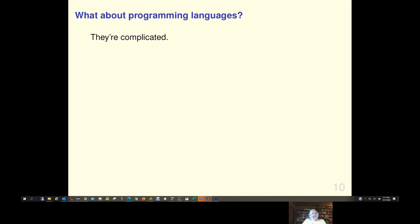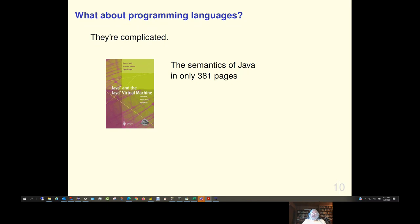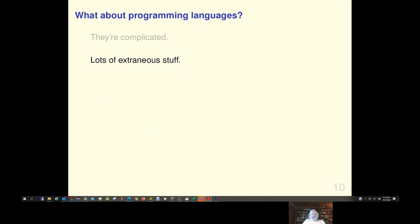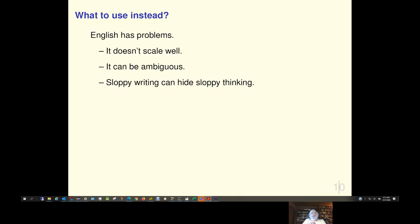And you can be sloppy in English. And sloppy writing can hide sloppy thinking. Well, what about programming languages? They're complicated. There's a book I found on the web called The Semantics of Java in only 381 pages. That's complicated. And programming languages have lots of extraneous stuff. And for good reason. Because they have to be translated into efficient machine code. So, what should we use instead? So, English has problems.